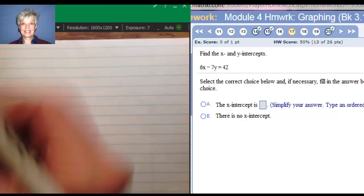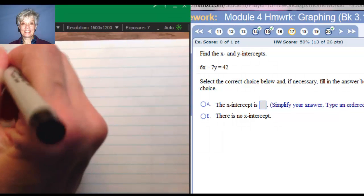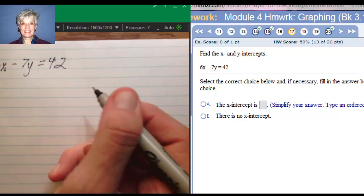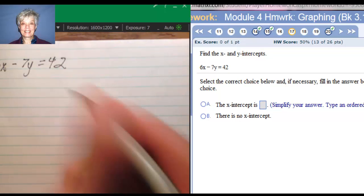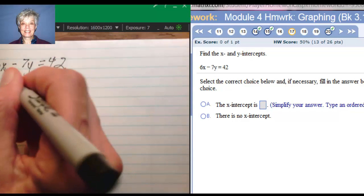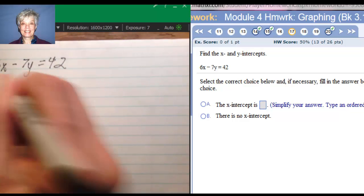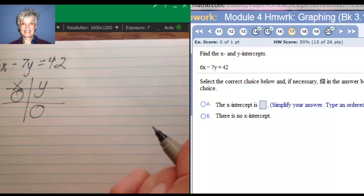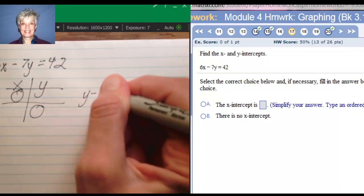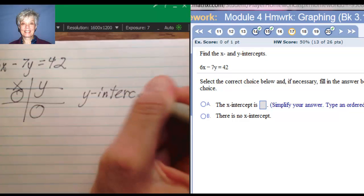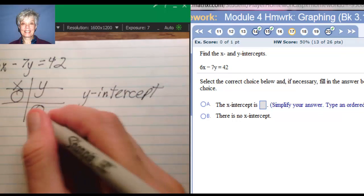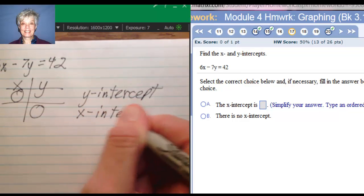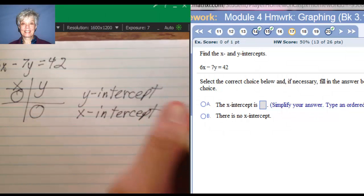Here we have 6x minus 7y equals 42. And it is often easier to graph these by hand just finding the points yourself by making an x and a y table and finding the intercepts. You do that by putting a 0 there and a 0 there. This will give you the y-intercept with a 0 in the first place. With a 0 in the second place, this will give you the x-intercept. If x is 0, what is y?